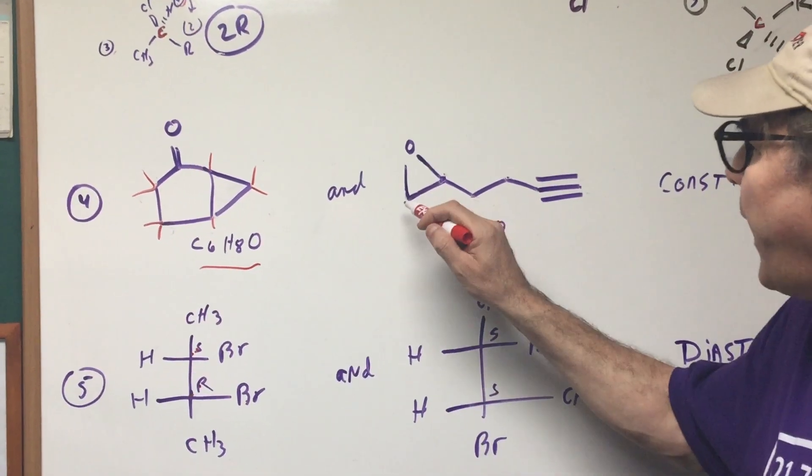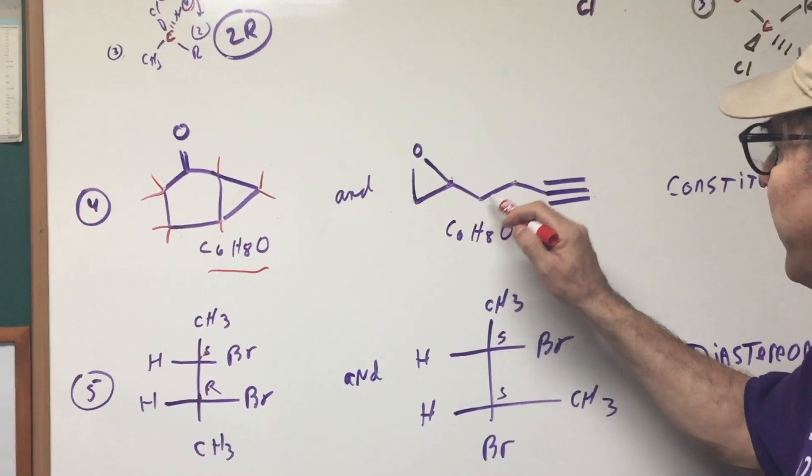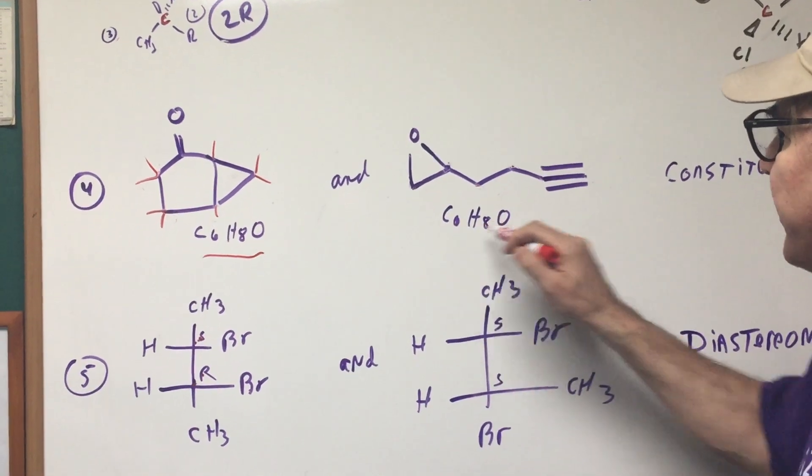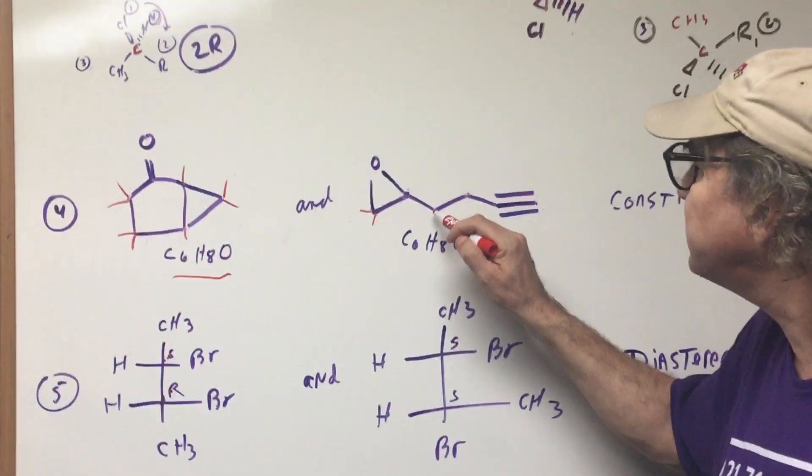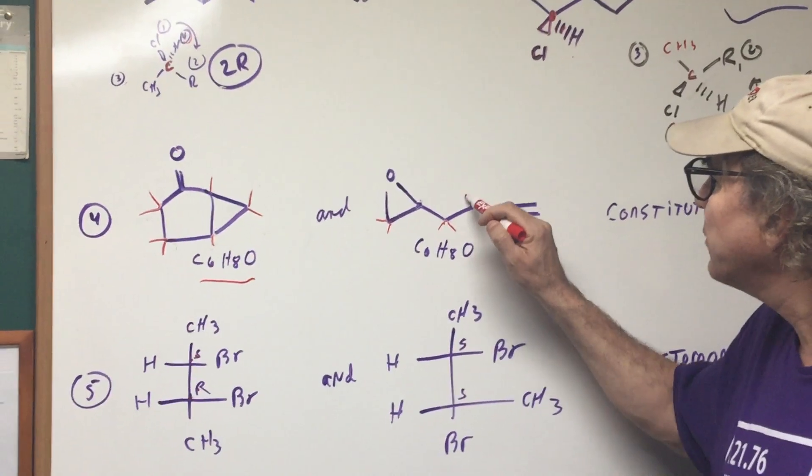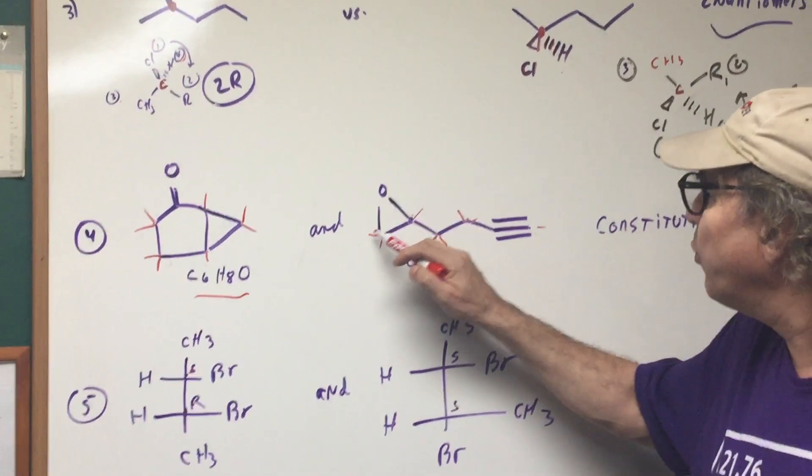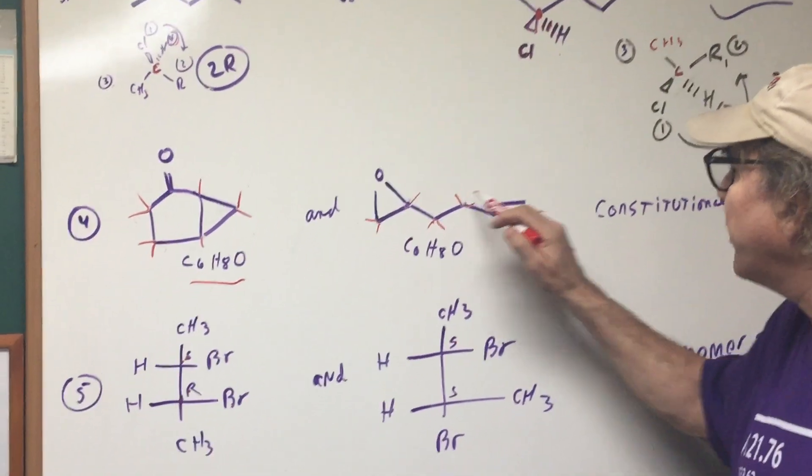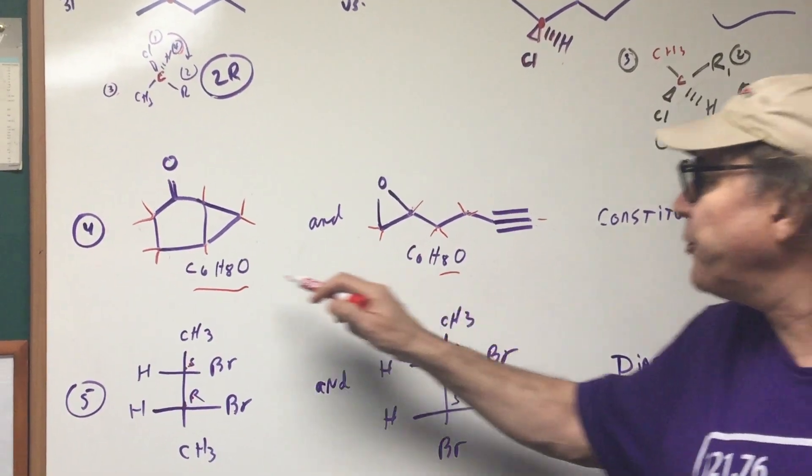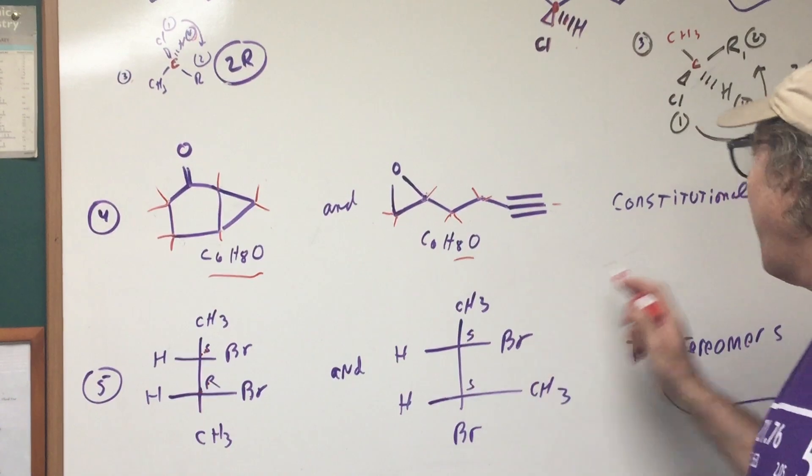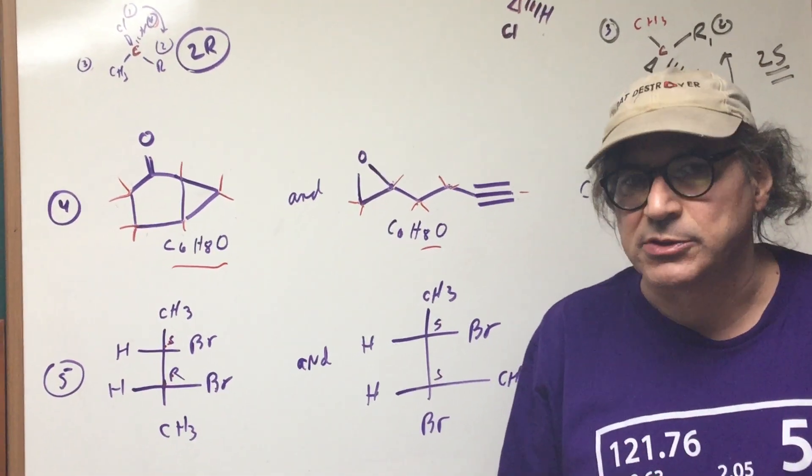When we go to this, again, we have 1, 2, 3, 4, 5, 6. 6 carbons, 1 O. And then I like to put my little cat whiskers. Like this. This guy gets only one whisker. And this gets a whisker. So 1, 2, 3, 4, 5, 6, 7, 8. So both of these are C6H8O, which makes these constitutional isomers.